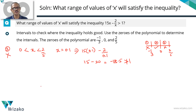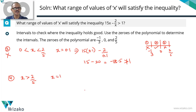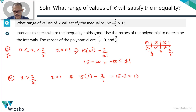Looking at the fourth interval — x greater than 2 by 5, i.e., greater than 0.4 — we go with x equals 1, which is easier to plug in than 0.5. The expression becomes 15 times 1 minus 2 by 1, which is 15 minus 2, equal to 13. Since 13 is greater than 1, the inequality holds good in the fourth interval.